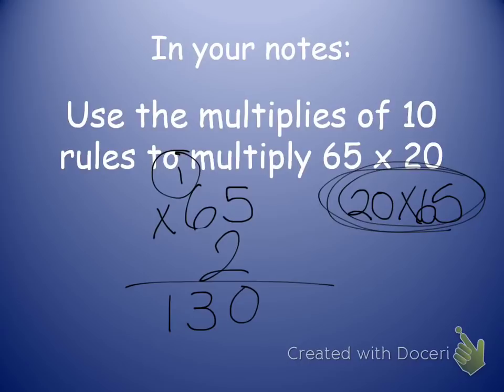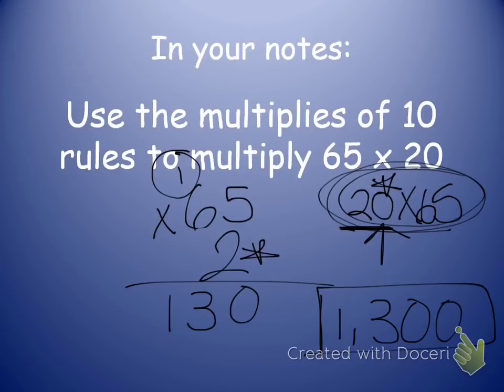But I'm not done. Because again, I just did my times 2. But really, it was times 20. So I have my 0 over here in my factor. So I have one 0 that needs to be added on. So I end up with 1,300 as my final answer.